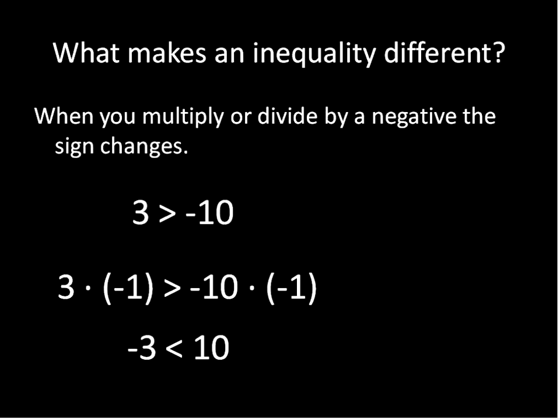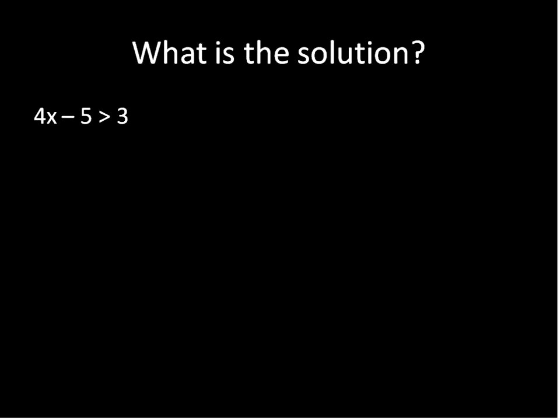We'll see that in a couple of the examples today, but basically that's the only difference between solving an inequality and solving an equation — when you multiply or divide by a negative, the sign will change. So let's go ahead and solve a couple of these inequalities. I'm going to start off by adding 5 to both sides of this inequality. When we're adding 5, we don't do anything abnormal — we don't have to switch the sign. So we have 4x on the left side, and it remains greater than 3 plus 5, which is 8.